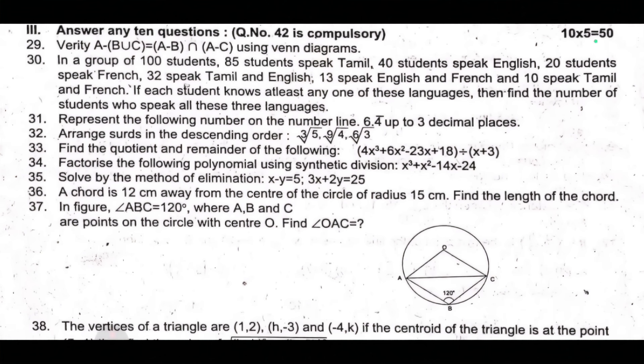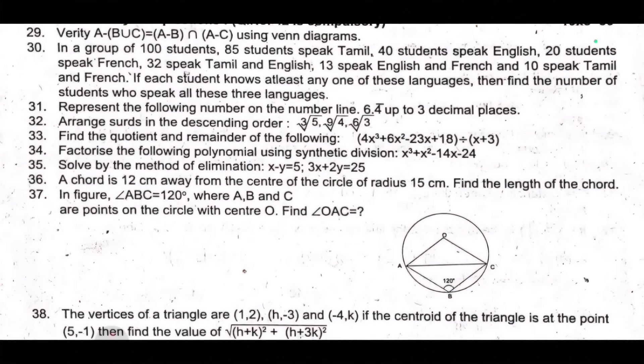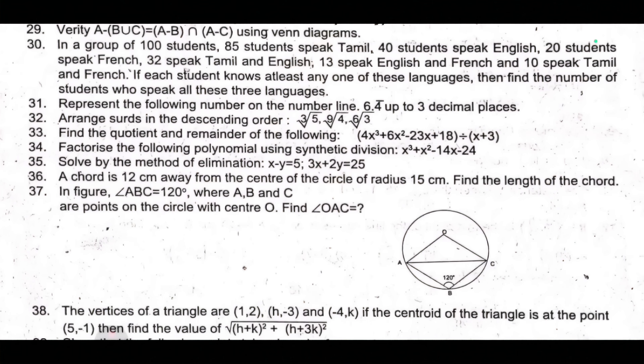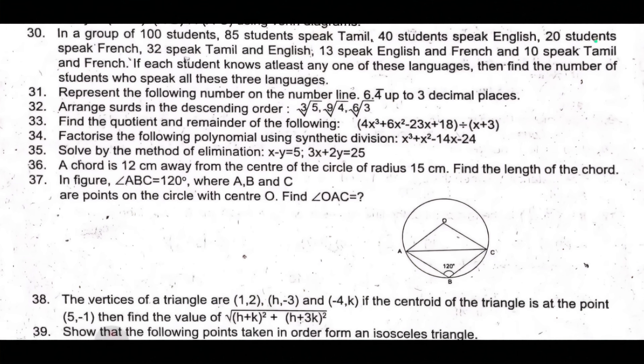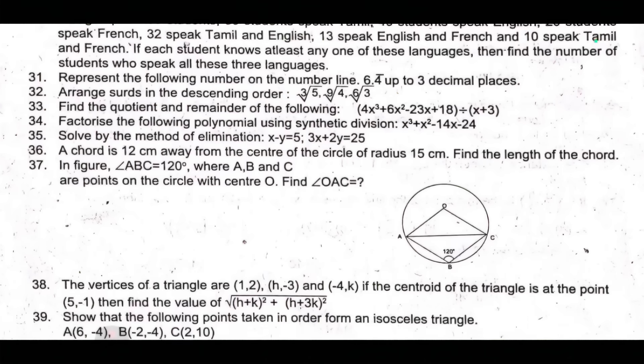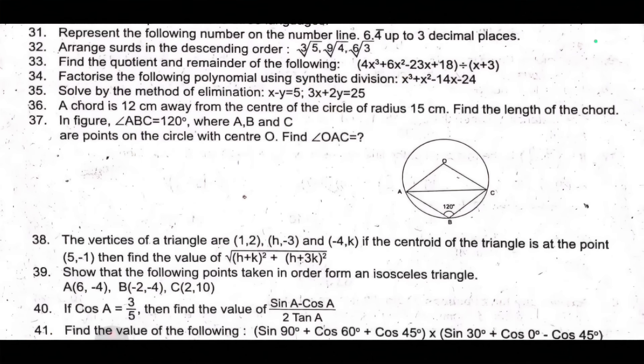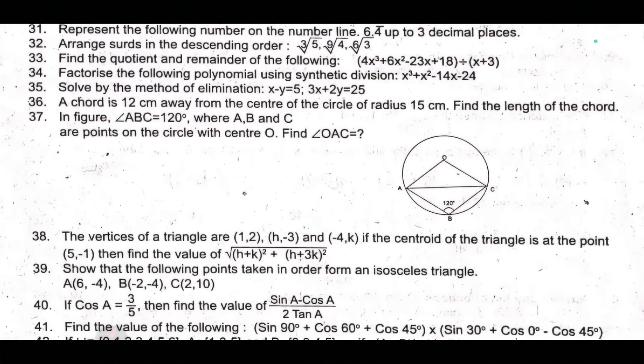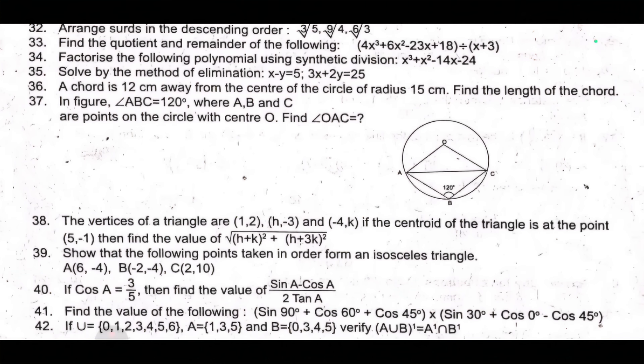Thirty-seventh, in figure, triangle ABC equal to 120° where A, B, C are points on the circle with center O, find angle OAC. Thirty-eighth, the vertices of a triangle are (1, 2), (H, -3), and (-4, K). If the centroid of the triangle is at the point (5, -1), then find the value of √[(H+K)² + (H+3K)²].